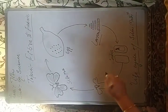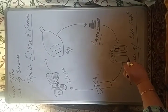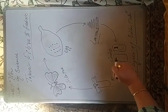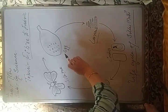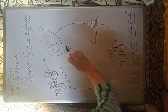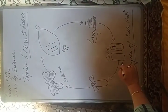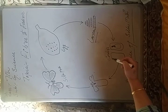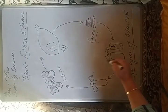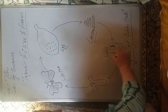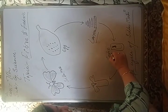The eggs are then hatched and converted into larvae — we can also call them caterpillars or silkworms. This larvae sheds its skin, a process called molting, and eats the mulberry leaves.